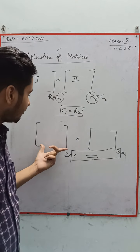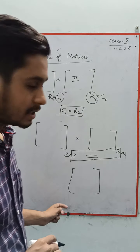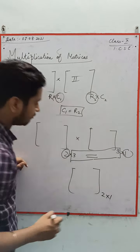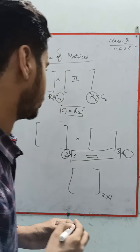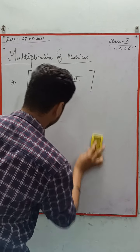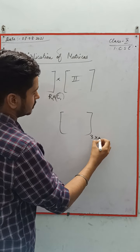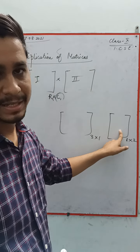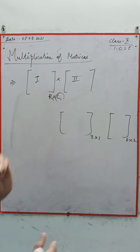For example, I have a matrix of order 2 cross 3 and I want to multiply it with a matrix of order 3 cross 1. The multiplication of these two matrices is possible because the column of the first matrix equals the row of the second matrix. After multiplying, you will get a resultant matrix of order 2 cross 1 — these are the outer numbers. My question for homework: if you have a matrix of order 3 cross 1 and another of order 1 cross 2, is multiplication possible, and what is the resultant order?